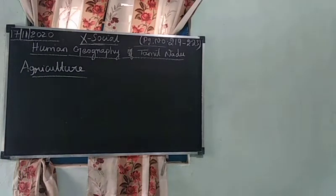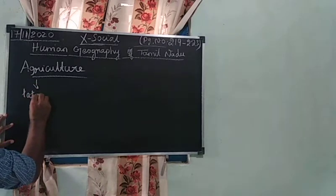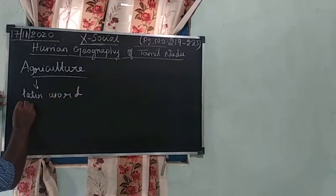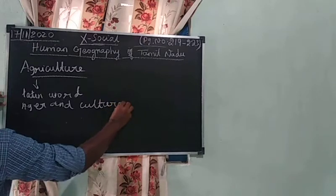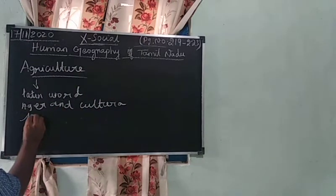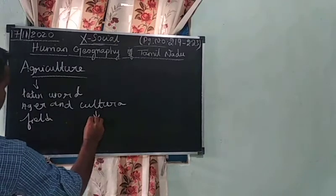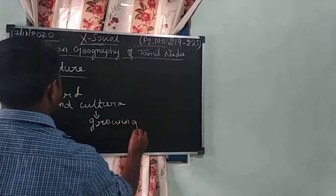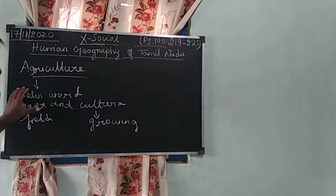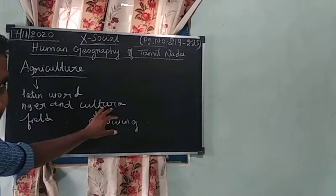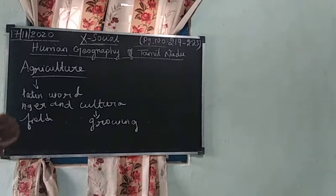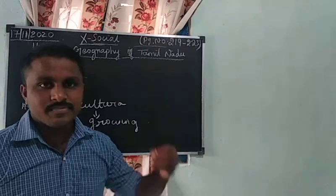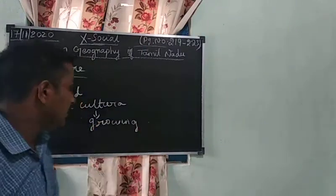Agriculture is derived from a Latin word — 'agri' and 'cultura'. Agri means field and cultura means growing. So agriculture includes cultivating crops as well as the rearing of animals, plants, and trees.